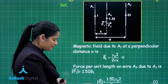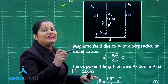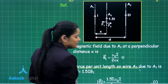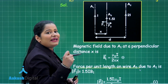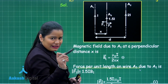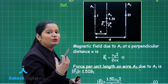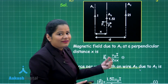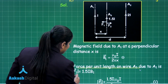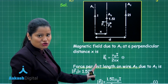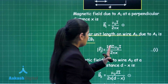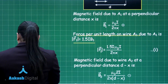The direction of B1 is given by the right-hand thumb rule — pointing the thumb in the direction of the current, the fingers indicate the magnetic field is into the plane, represented as a cross. Wire A3 experiences a force given by BIL. We focus on force per unit length F/L, which equals B × I, where I is the current through A3 (which is 1.5I) and B is B1. So F1/L = 1.5I × B1 = 1.5I × μ₀I / 2πx.